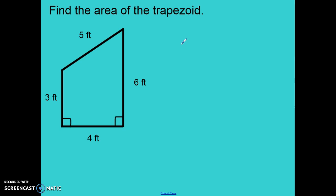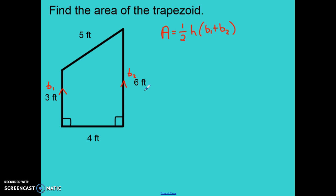Let's do one more example. To find the area of this trapezoid, we start by writing the formula the second way: A equals one-half times the height times the sum of base one and base two. The two parallel sides are the left side and the right side — three feet and six feet. So base one is three feet and base two is six feet. The height must be perpendicular to the bases, which is the side that is four feet long.